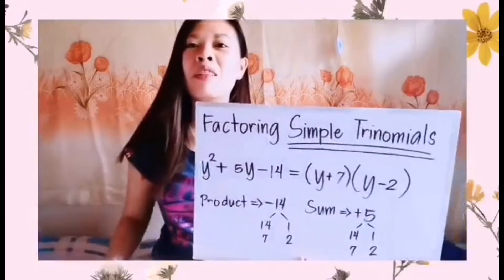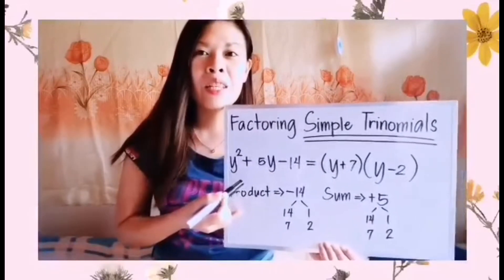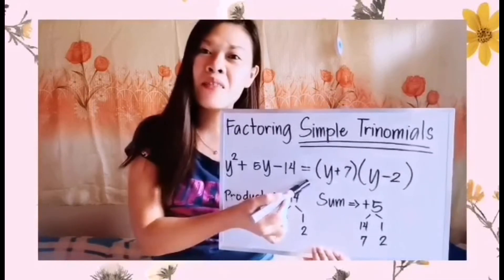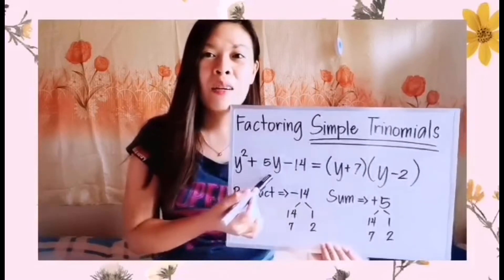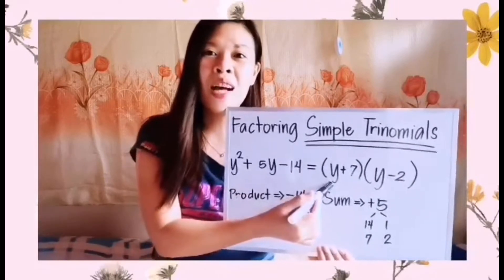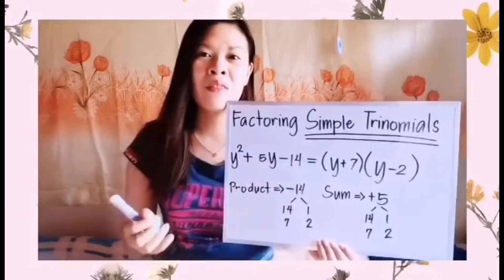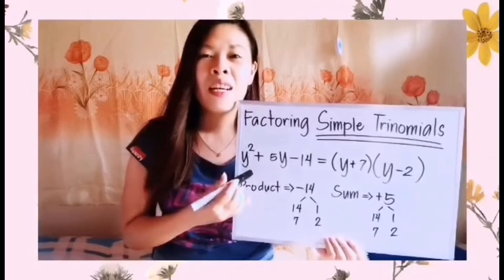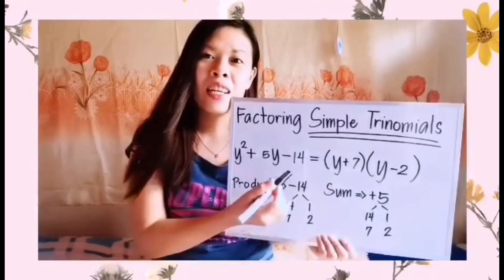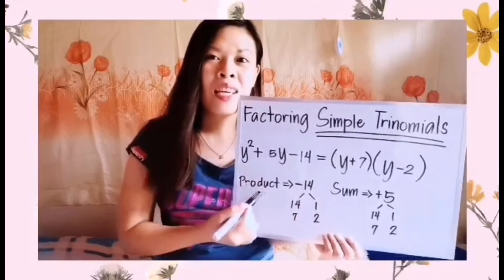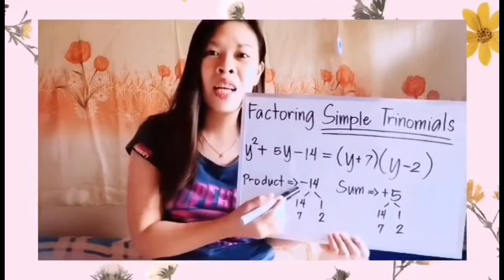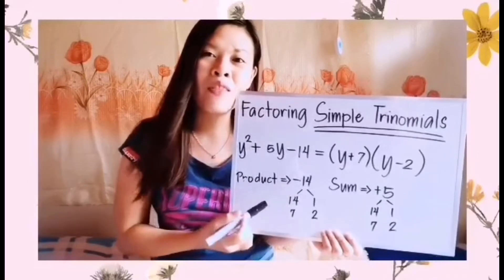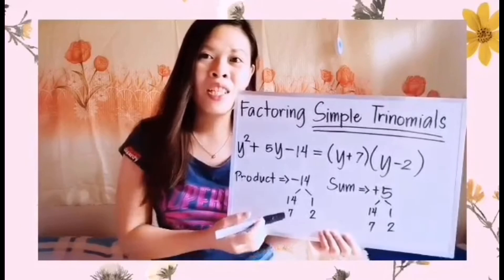Now let us have our third example of factoring simple trinomials. Our third example is y squared plus 5y minus 14, which equals the quantity of y plus 7 times the quantity of y minus 2. Following the same steps: the factors of y squared are y and y. For the third term, negative 14, the possible factors are 14 and 1, or 7 and 2.